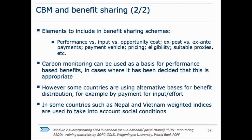There are different aspects to keep in mind when deciding benefit-sharing schemes. If the system is input-based, it makes more sense to pay communities for monitoring and feeding information into national systems independently of results. However, if the system is performance-based — where total payment is based on carbon gains and prices — then payment must be high enough to cover monitoring costs, opportunity costs, and the implementation of additional activities.